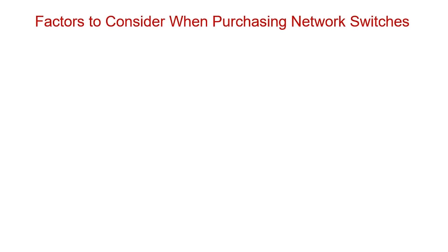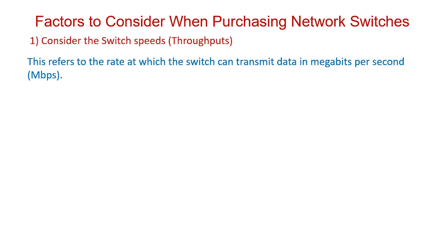One may ask: how do I select the appropriate switch for my network? Here are some factors to consider when purchasing a network switch. First, consider the switch speed, also known as throughput. This refers to the rate at which the switch can transmit data in megabits per second. For example, a switch can have a speed of 10–100 Mbps, known as 10Base-T or Fast Ethernet switches. These are okay for a small home office network.